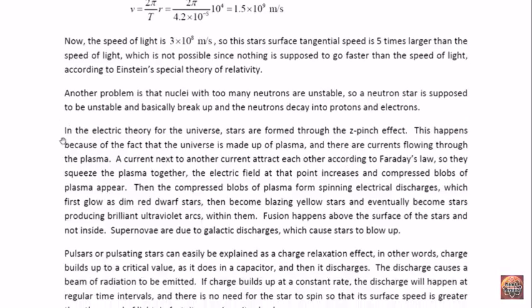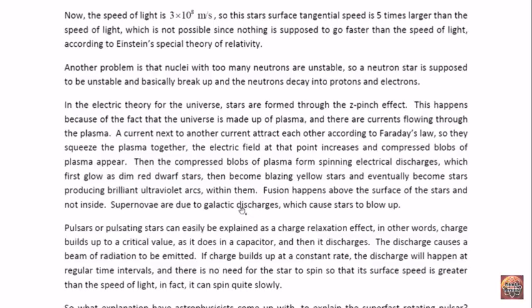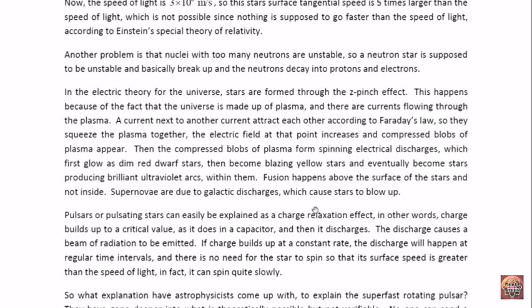Let's look at the other theory. In the electric theory for the universe, stars are formed through the Z-pinch effect. This happens because of the fact that the universe is made up of plasma, and there are currents flowing through the plasma. A current next to another current attracts each other according to Faraday's law, so they squeeze the plasma together. The electric field at that point increases and compresses blobs of plasma. Then the compressed blobs of plasma form spinning electrical charges, which first glow as dim red dwarf stars, then become blazing yellow stars, and eventually become stars producing brilliant ultraviolet arcs within them. Fusion will happen above the surface of the stars but not inside. And according to this theory, supernovae are due to galactic discharges, which causes stars to blow up.